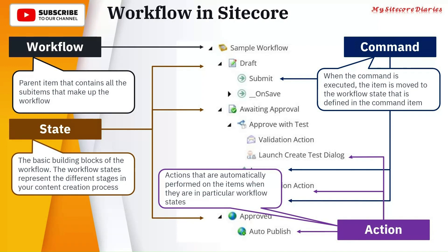So the very important things in Sitecore are state, command, and action. State is where your content workflow sits — like Draft, Awaiting Approval, and Approved. Depending on your requirement you can have multiple states. Command defines when to move from one state to another, and action is something that gets automatically executed when entering a state.